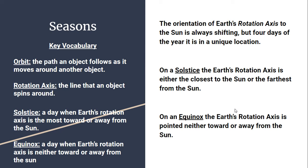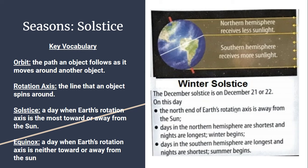The solstice is the day when Earth's rotation axis is most toward or most away from the Sun, and the equinox is the day when the axis is neither toward nor away. Here you can see the winter solstice: the northern hemisphere is receiving less sunlight and the southern hemisphere is receiving more. It occurs on December 21st or 22nd, depending on whether it's a regular or leap year. It's sometimes called the December solstice because it's winter in the northern hemisphere but summer in the southern hemisphere. For our studies, we use the term winter solstice to mean winter in the northern hemisphere.